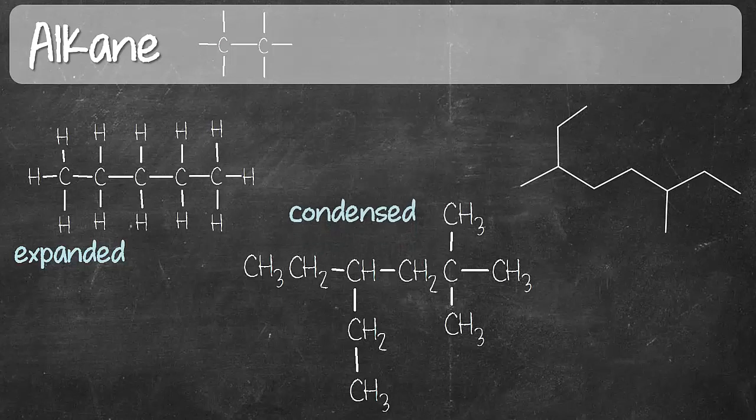The structure in the center is condensed where the bonds between the carbons and the hydrogens are not shown and they are shown as a group like CH3, CH2, and CH. The structure on the furthest right is called a bond line or a skeletal structure where you don't see carbons and hydrogens where each point in the structure represents a carbon and its corresponding number of hydrogens.